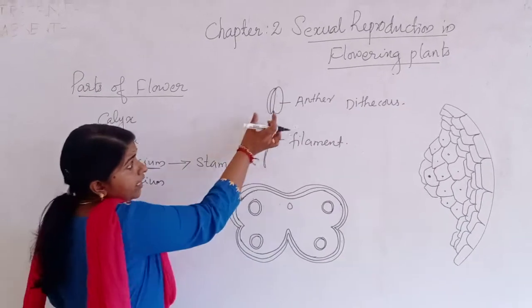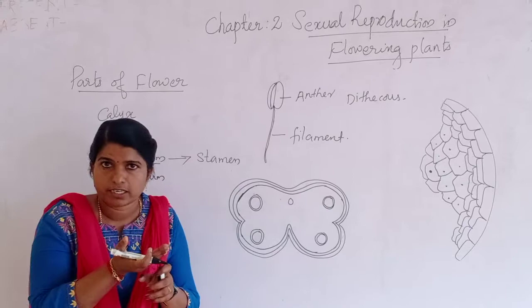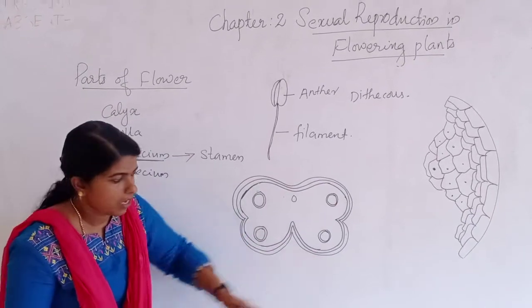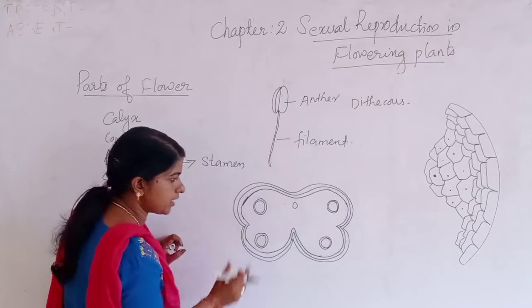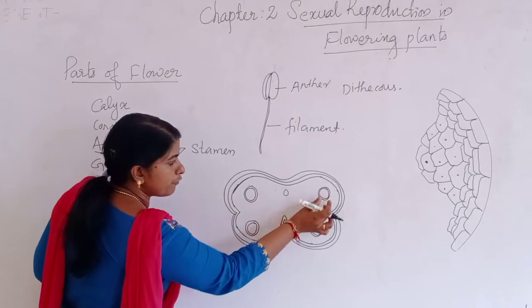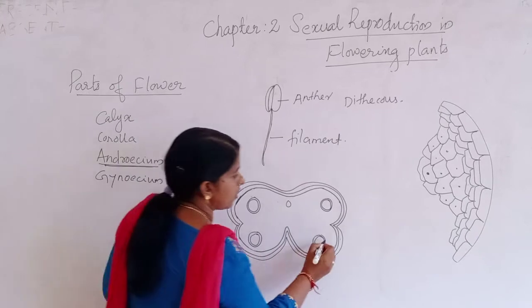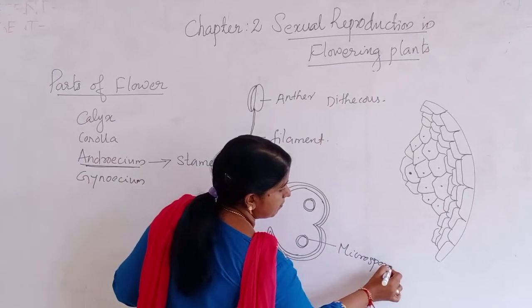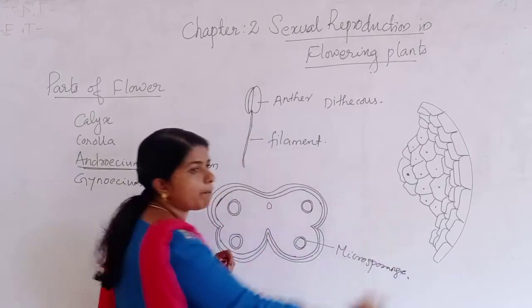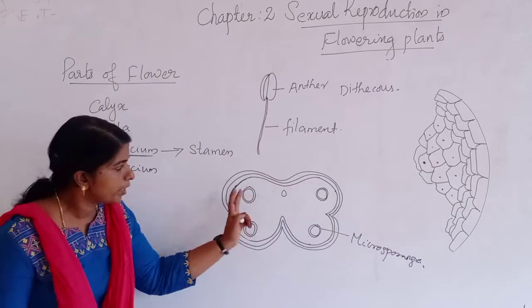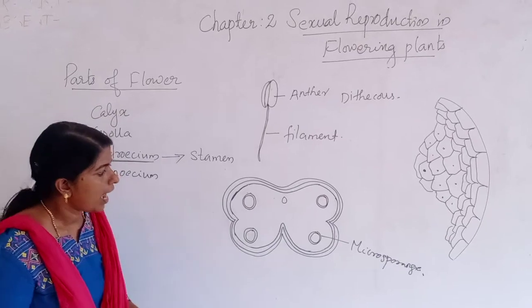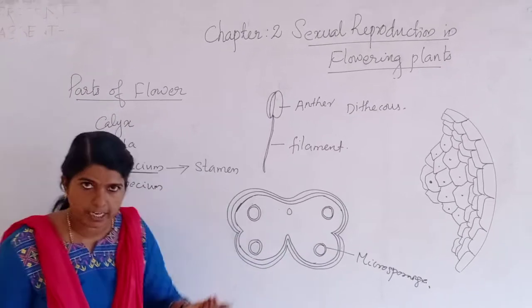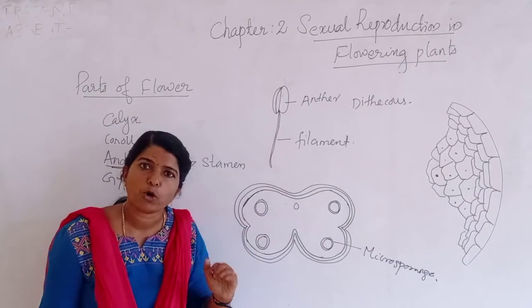Now, if you take the cross section, it appears like a four-sided structure. If you observe inside, at the center of each corner, you can see a structure called microsporangia. So how many microsporangia can you see? Four.